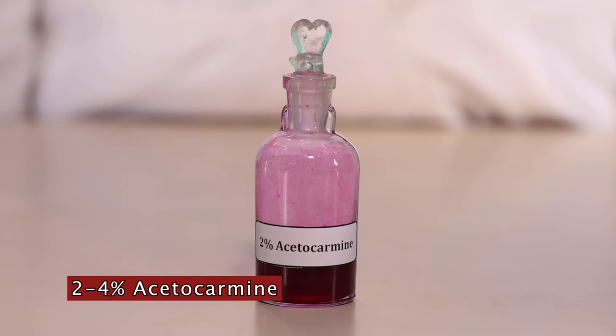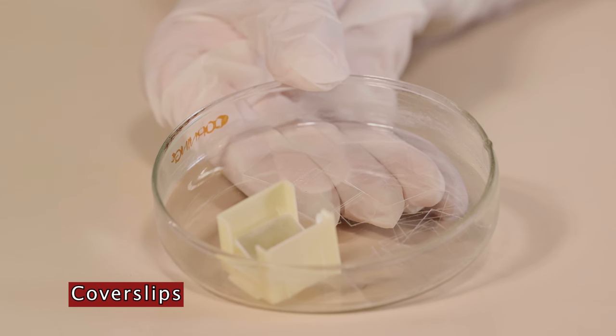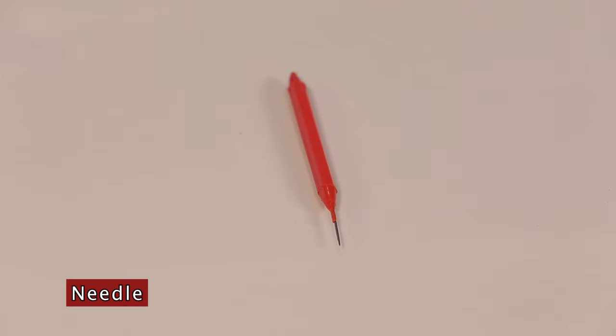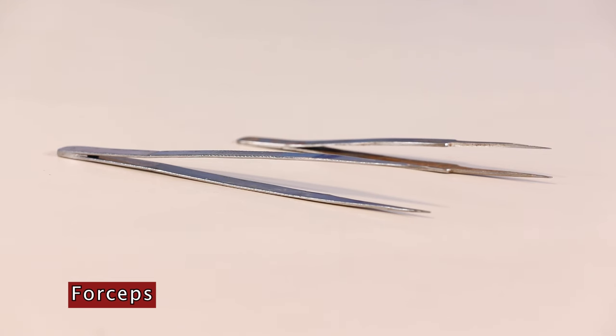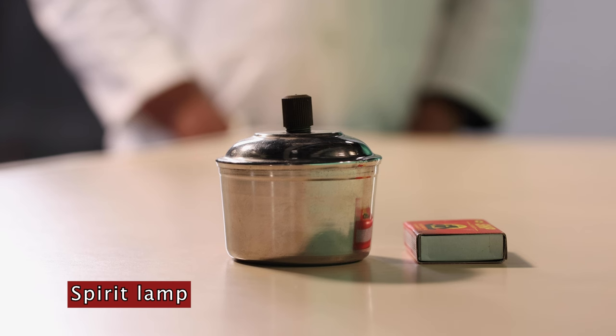Let us study staining of nucleic acid by acetocarmine. The materials required are onion bulb, 2 to 4 percent acetocarmine or aceto-aussine stain, slide, cover slip, brush, needle, forceps, knife, blotting paper, spirit lamp, matchbox and compound microscope.